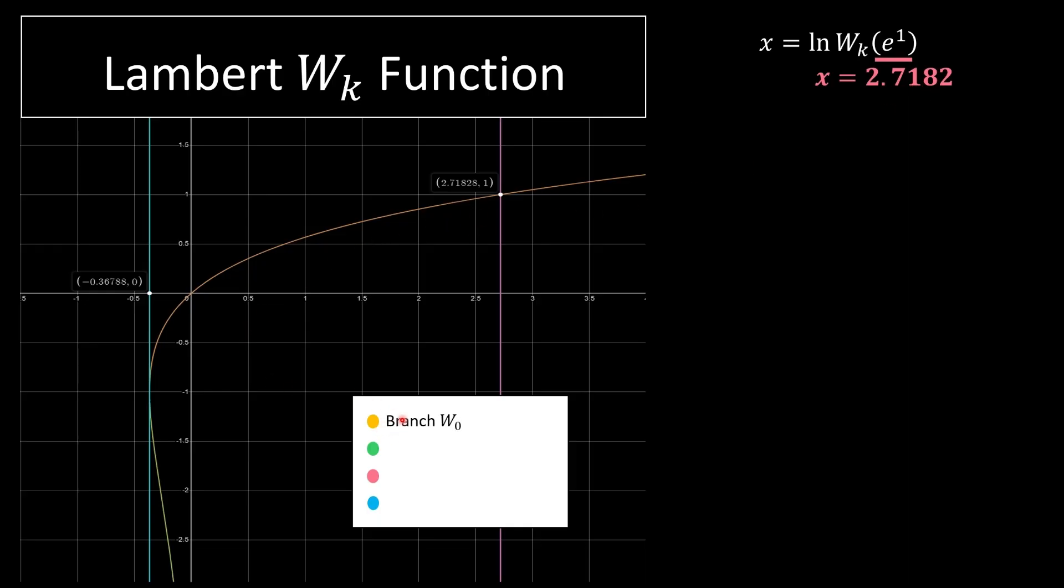This orange yellow line over here is the branch, the branch W0. This green line over here that goes at the bottom is the branch W of negative 1.